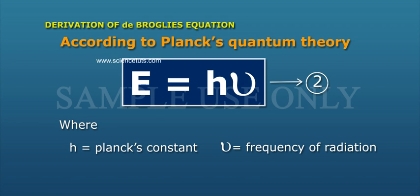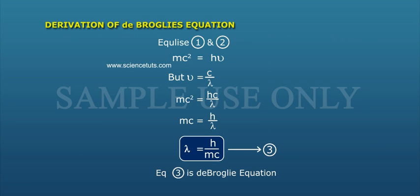According to Planck's Quantum Theory, E is equal to H nu, Equation 2, where H is Planck's Constant and Nu is Frequency of Radiation. Equalize 1 and 2: MC square is equal to H nu.